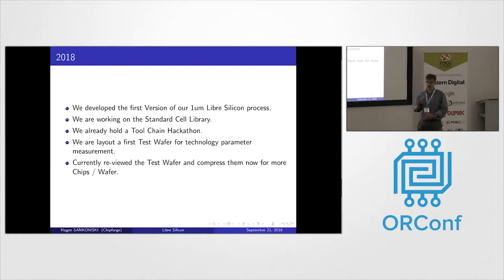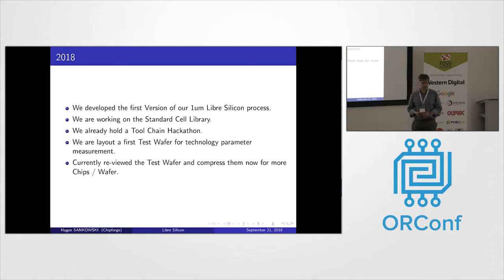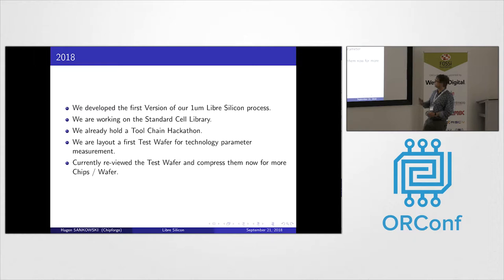Currently we have our first test wafer design. It's not complete yet — we have to rework some issues. We had a review last week and decided to shrink it a little bit so we can place more dies on one wafer, just for the statistics. With that test wafer, we want to measure all the structures, all the parameters for the transistors, capacitance, resistance — all the stuff — and put them into a SPICE model. With that SPICE model we can develop the standard cell library further, size the transistors, and calculate everything.